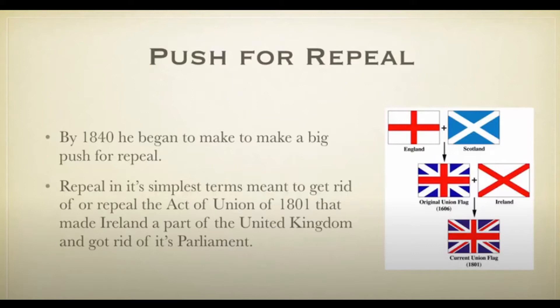By 1840, O'Connell began a big push towards repeal. In the simplest terms, repeal meant to get rid of the Act of Union of 1801. There's an image showing how the Act of Union took place, with England, Scotland and Ireland in the original Union flag. Repeal would separate Ireland from the United Kingdom and give Ireland back its own Parliament.